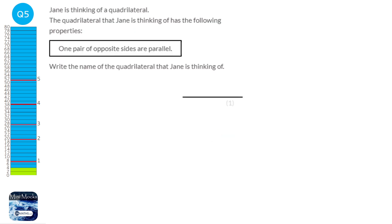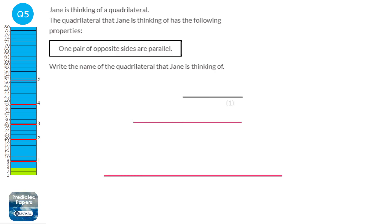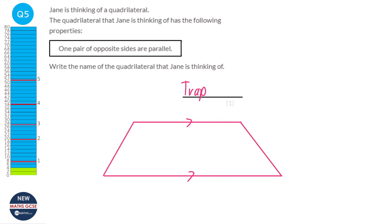If we try to draw a quadrilateral with a pair of parallel sides and join them up — it's got 4 sides — the shape we draw will always be a trapezium. You might think that a rectangle or square has 1 pair of parallel sides, but it actually has 2 pairs of parallel sides. The definition of a trapezium is it has just 1 pair of parallel sides, and any quadrilateral with 1 pair of parallel sides is a trapezium.